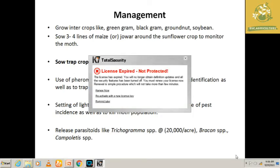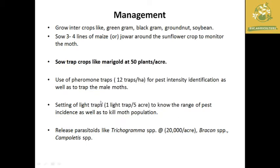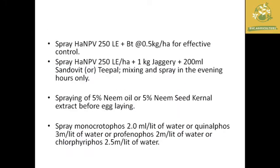Monitor using pheromone traps at 12 traps per hectare for pest identification, and set light traps at one trap per five acres to determine the range of pest incidence and kill moth populations. For integrated pest management, release the parasitoid Trichogramma species at 2,20,000 per hectare and Bracon species at field level. For chemical control, apply monocrotophos 2.0 ml per liter of water or quinalphos 3 ml per liter. Also spray Helicoverpa armigera nucleopolyhedrovirus at 250 LE plus Bt at 0.5 kg per hectare, or spray 5% neem oil or 5% neem seed kernel extract before egg laying.